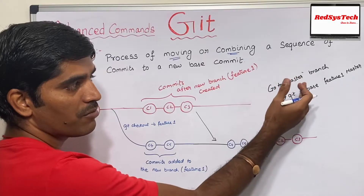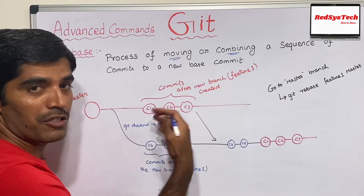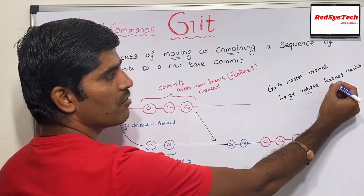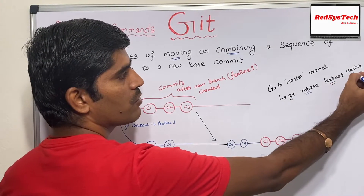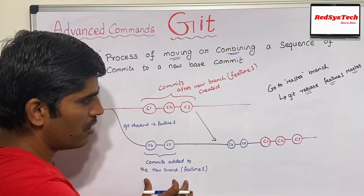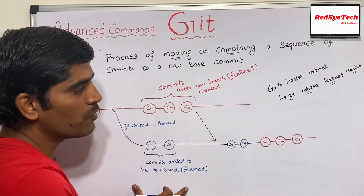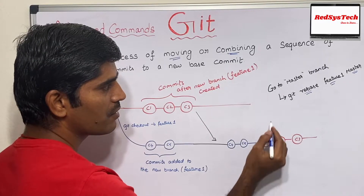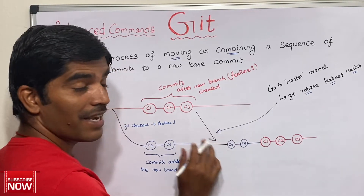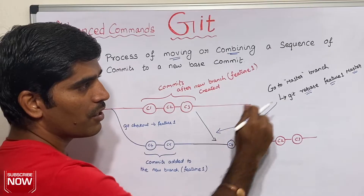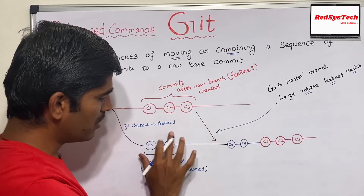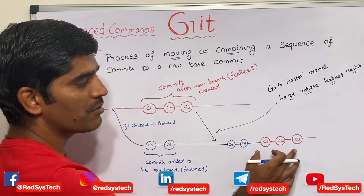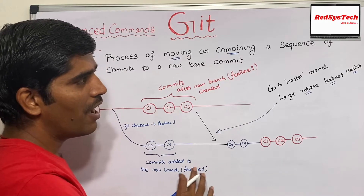To do this, you switch to the master branch and run 'git rebase feature1 master'. Git rebase will take the commits C4 and C5 from the feature branch and bring them into the master branch. That is how it works.